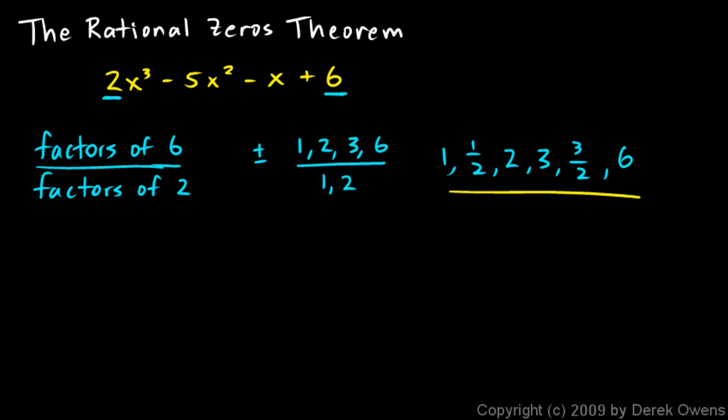So this list is all of the possible numbers that can be made by taking a factor of 6 and dividing it by a factor of 2. And I'll put a little plus minus out front. And that plus minus applies to all of these. And what I've done here is not really a standard notation, but I think my meaning is clear. I mean all the possible numbers that can be made by doing this, taking factors of the constant term divided by factors of the lead coefficient.